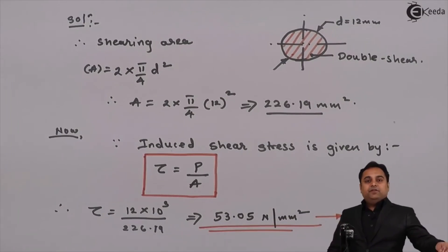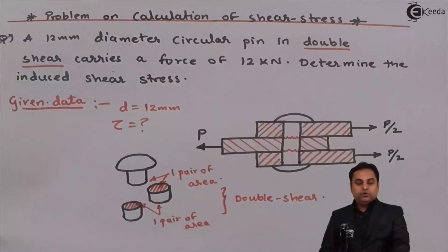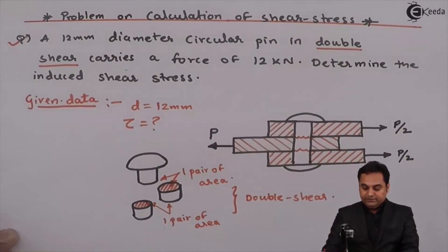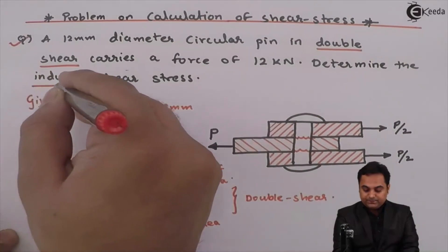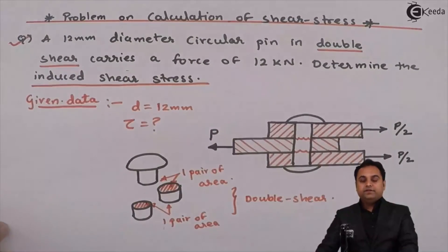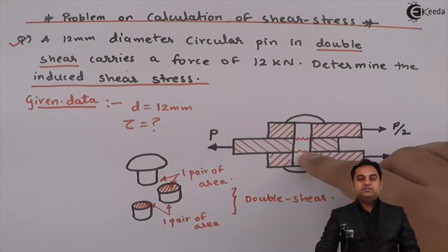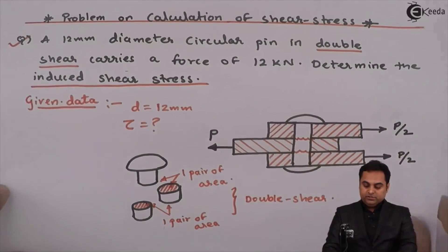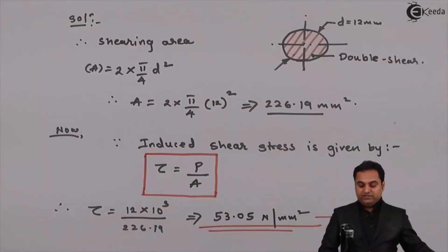So this is the answer. As we have seen in this problem, the question was to calculate the induced shear stress. And this induced shear stress which is there in this pin or rivet, we have found out it is 53.05 Newton per mm square. And with this, we complete the question.